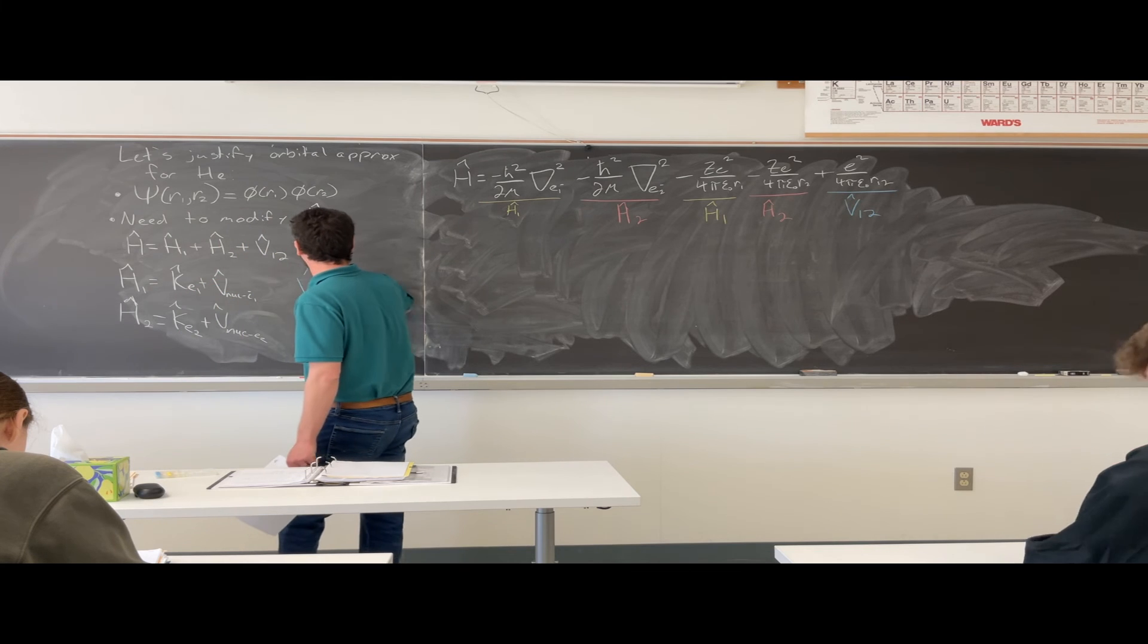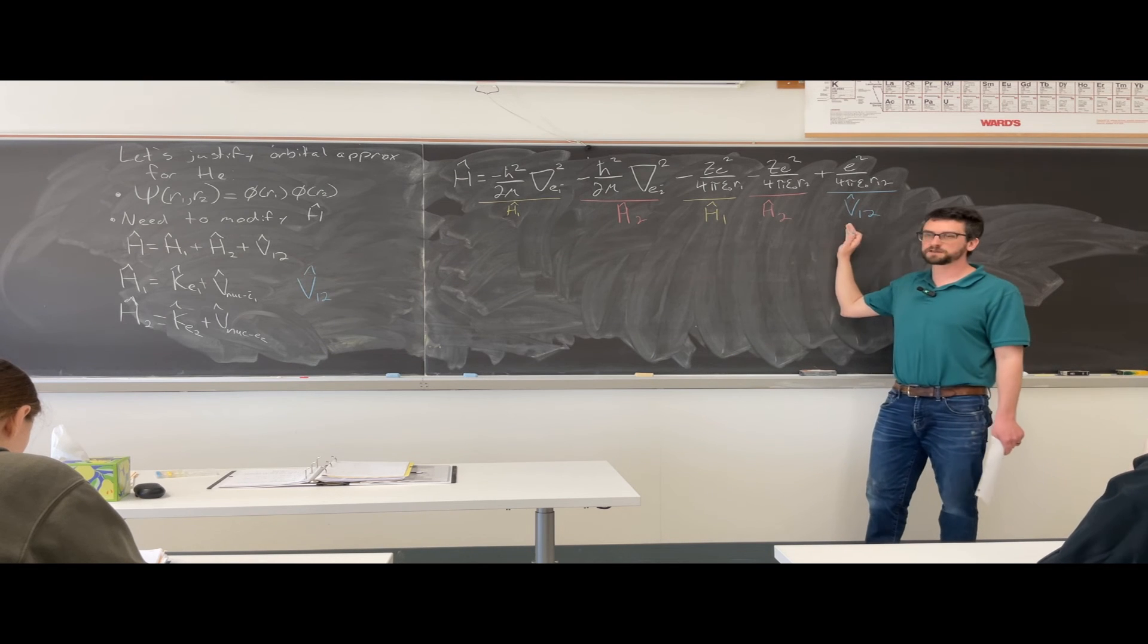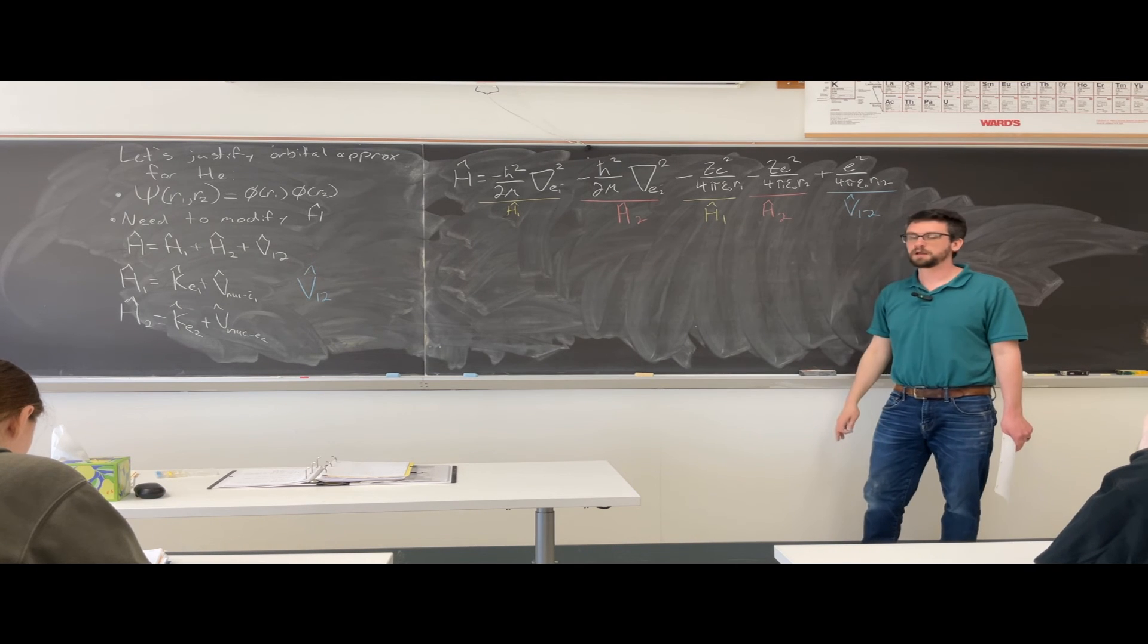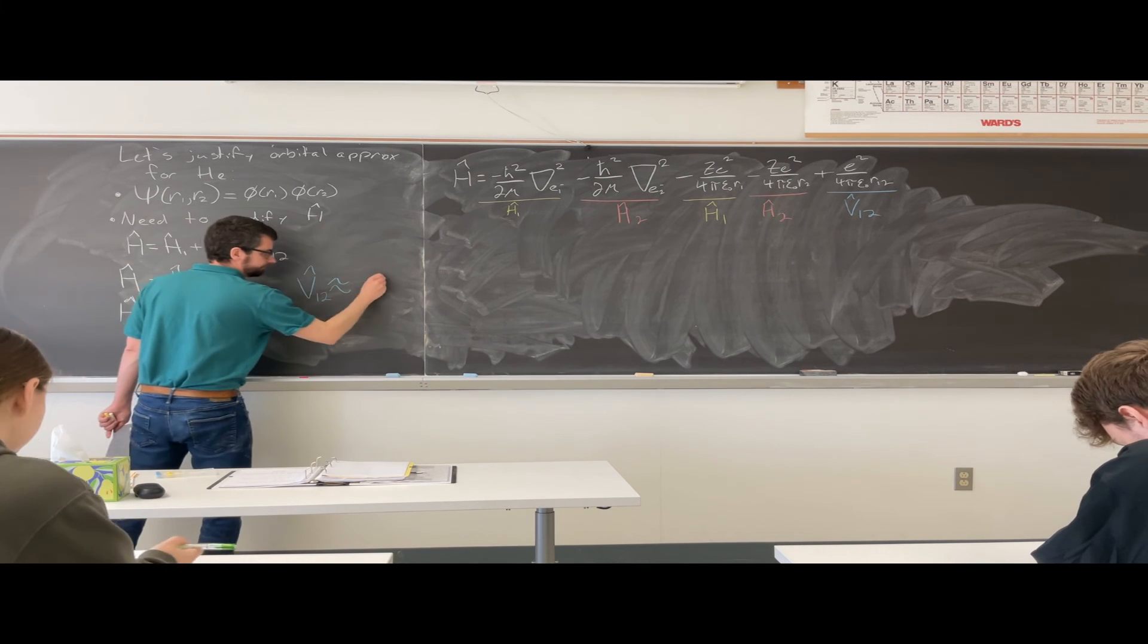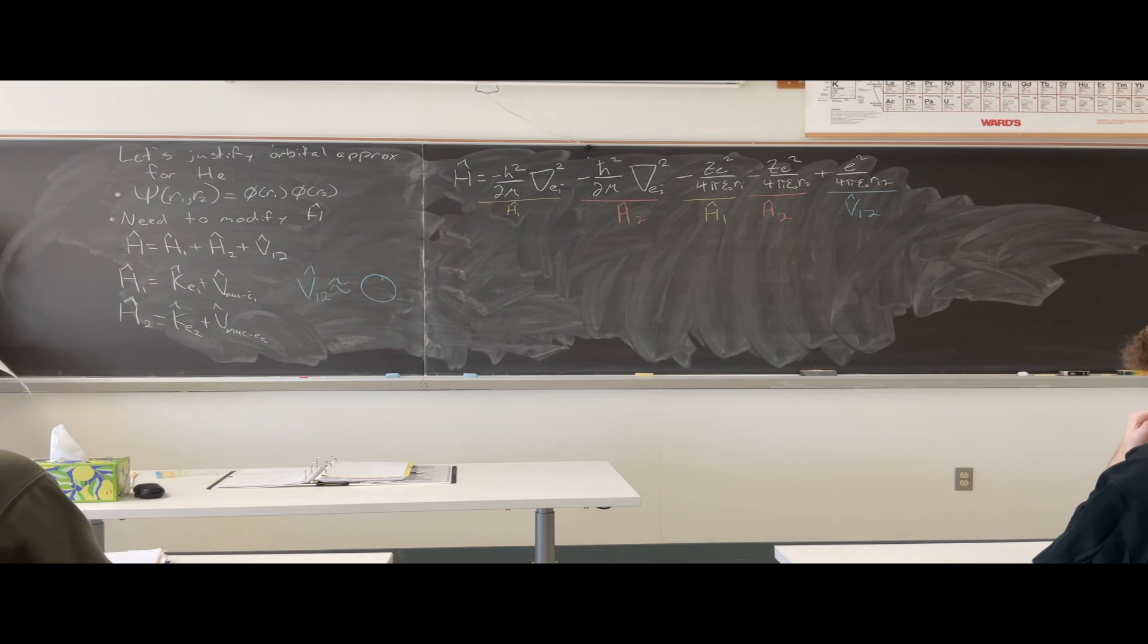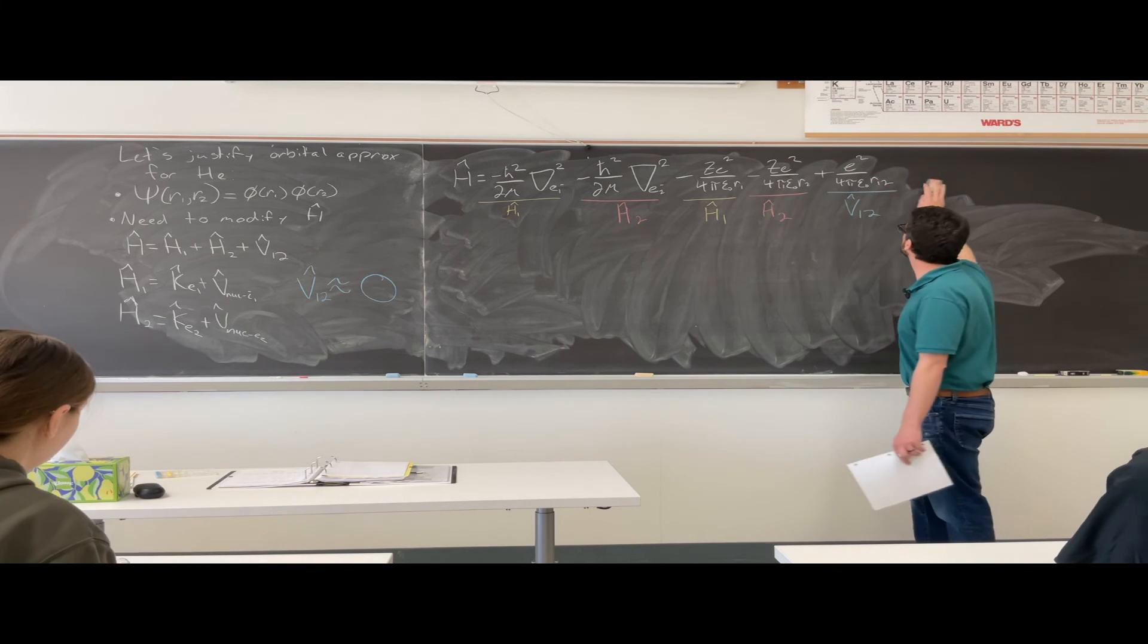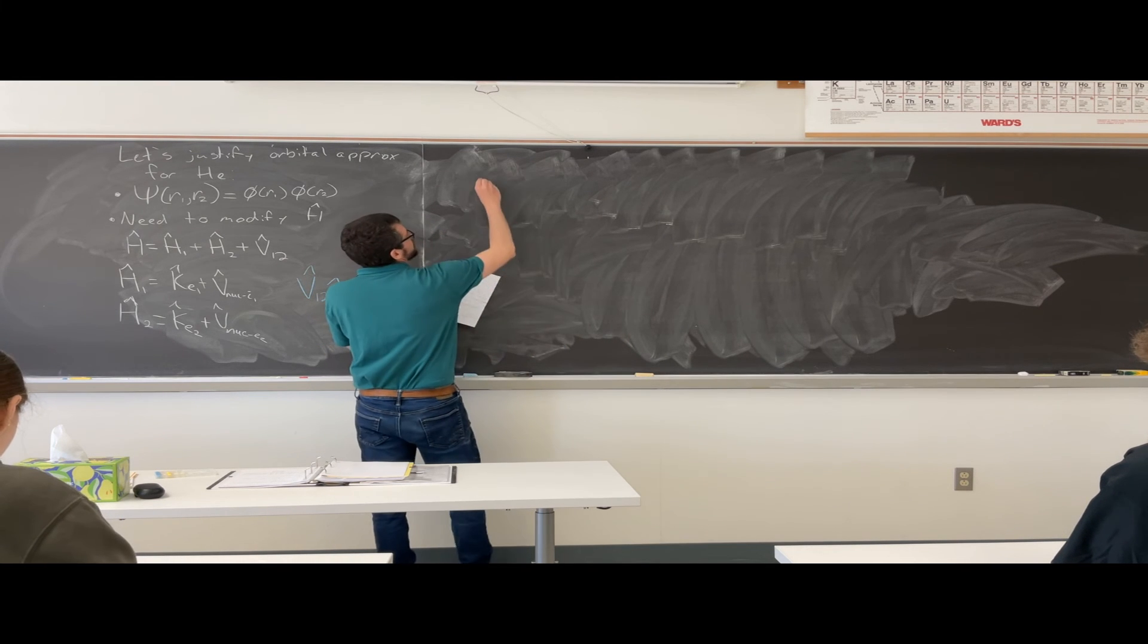Now, V12. What does it actually depend on? Depends on the position of both electrons. But we've made the orbital approximation. Which says what? They don't interact. So what could this be approximated to be? Zero.